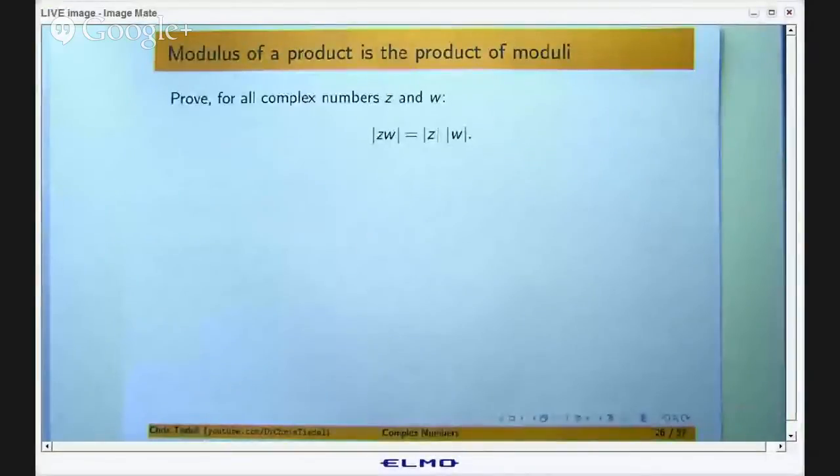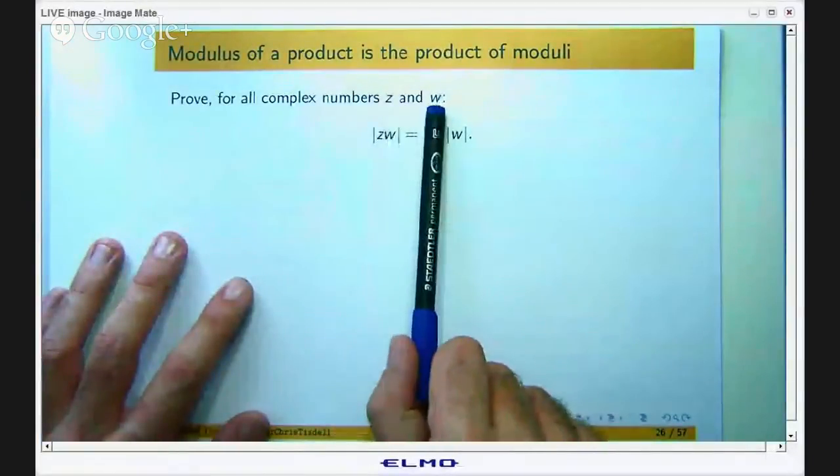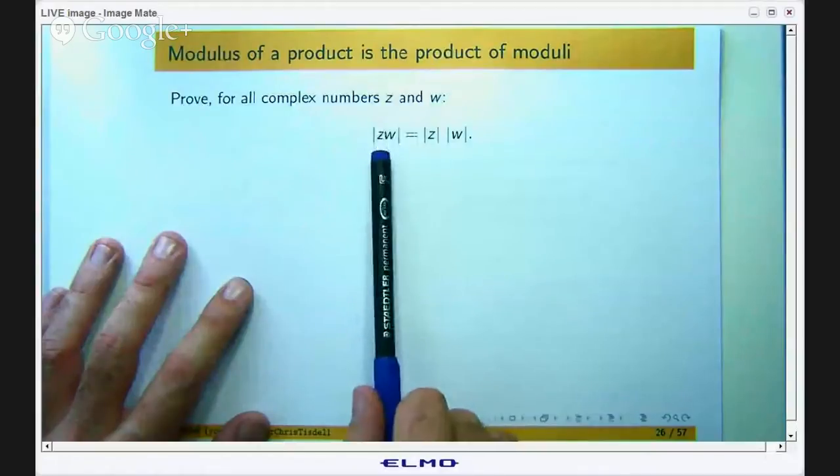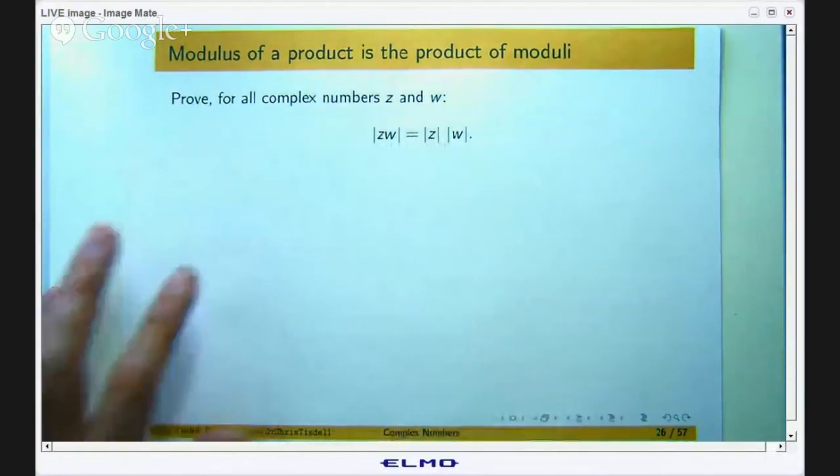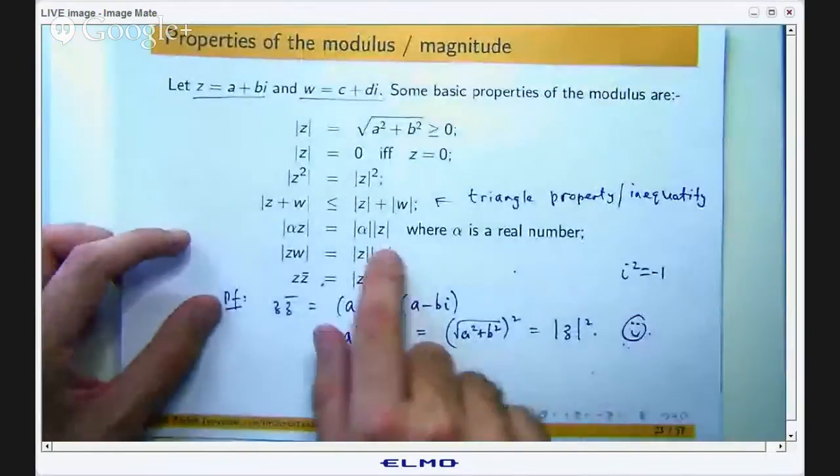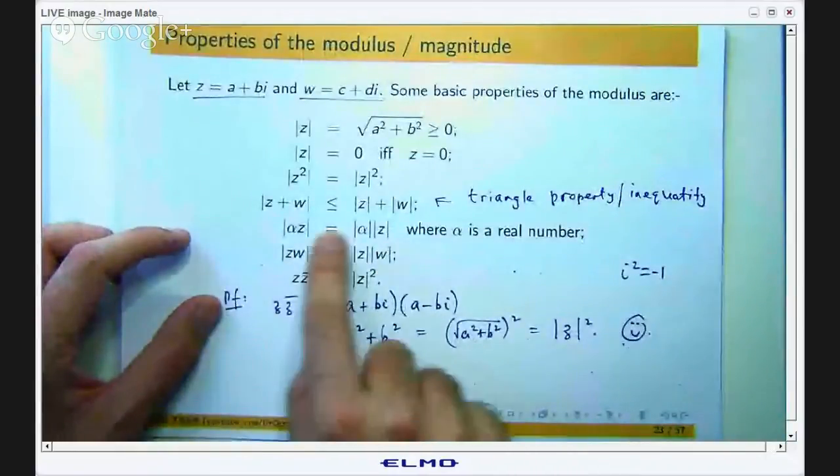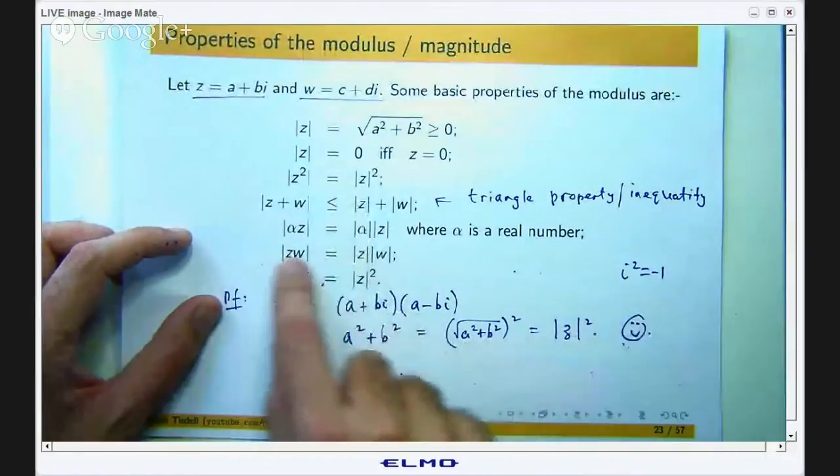Okay, so here we are asked to prove for all complex numbers z and w that the modulus of the product is just the product of the moduli. Now this comes from this little table here that I showed you in the previous presentation.